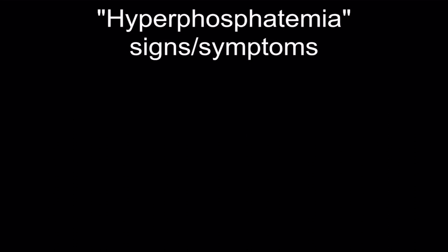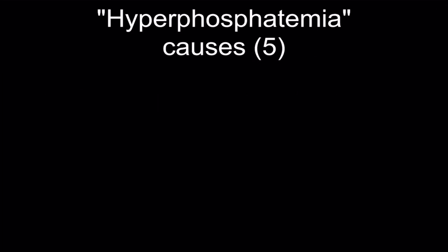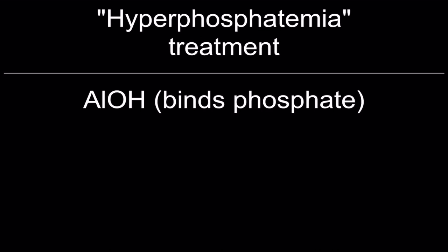Signs and symptoms of hyperphosphatemia: ectopic calcifications, or heart block. Top five causes: renal failure, sepsis, chemotherapy, hyperthyroidism, removal of parathyroid gland. Treatment: aluminum hydroxide binds phosphate.